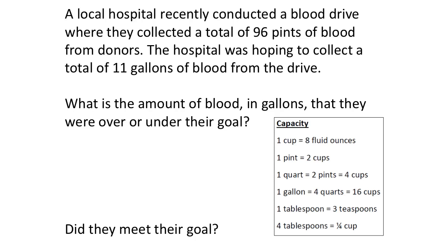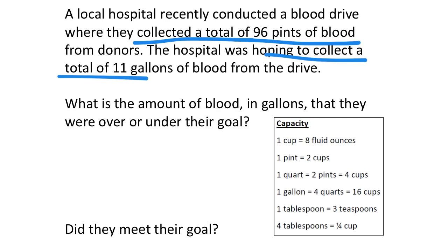Here's a word problem: a local hospital recently conducted a blood drive and collected 96 pints of blood. The hospital was hoping to collect 11 gallons. What is the amount of blood in gallons they were over or under their goal, and did they meet their goal? I'd actually answer the second question first. Let's identify key parts: they collected 96 pints, and they were hoping to collect 11 gallons.